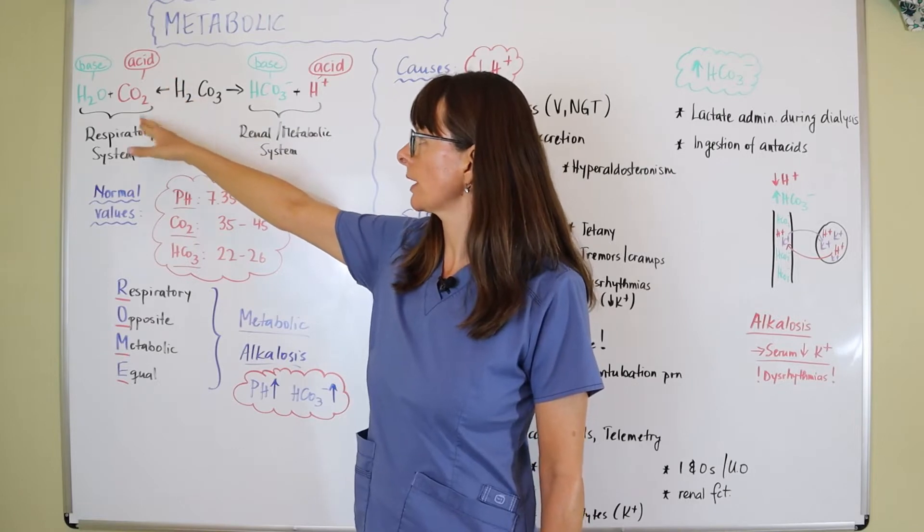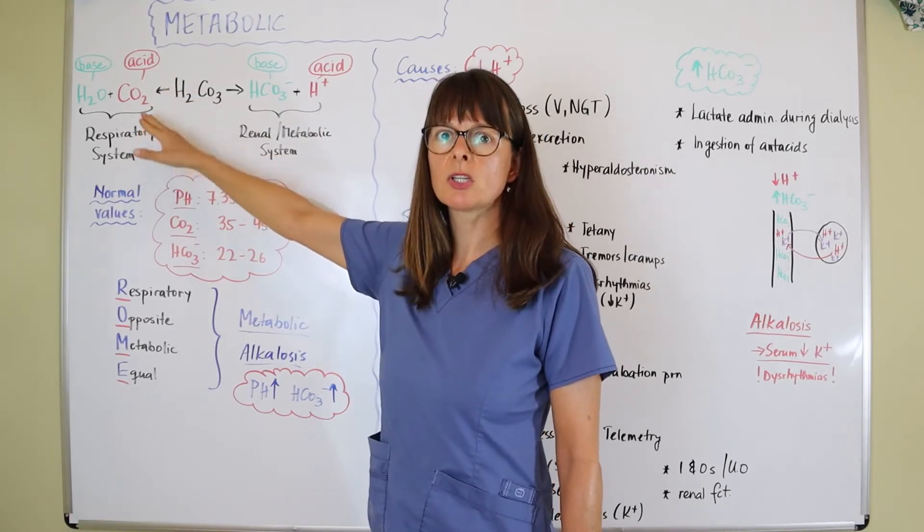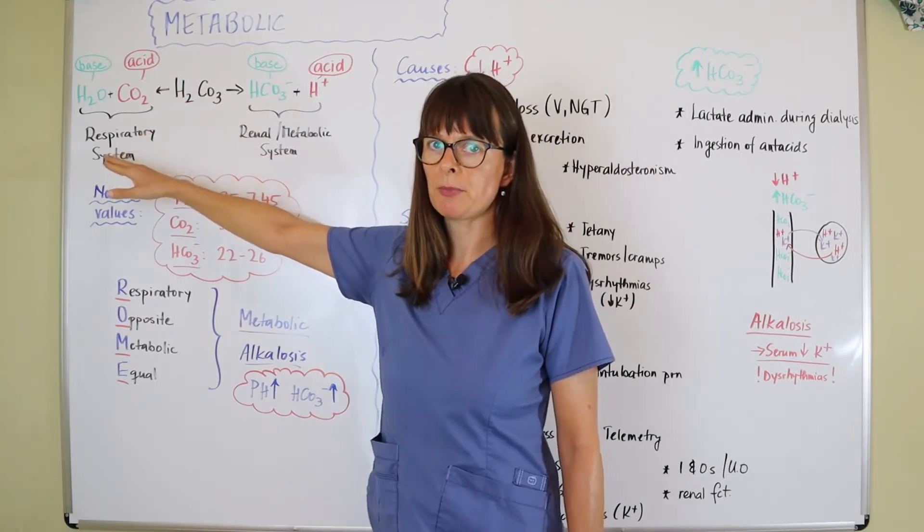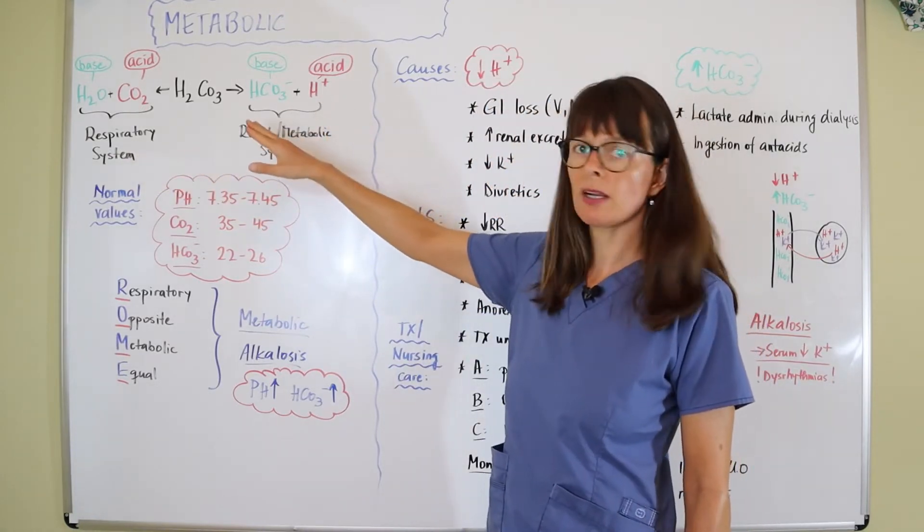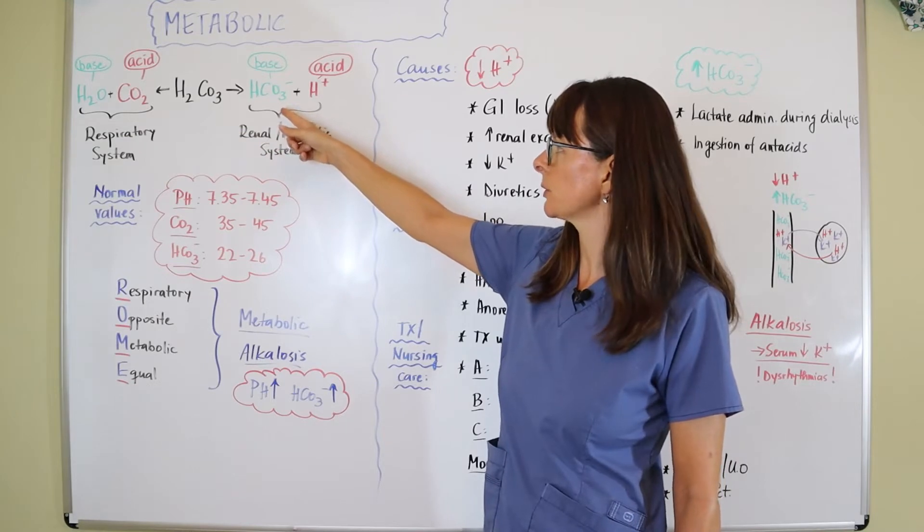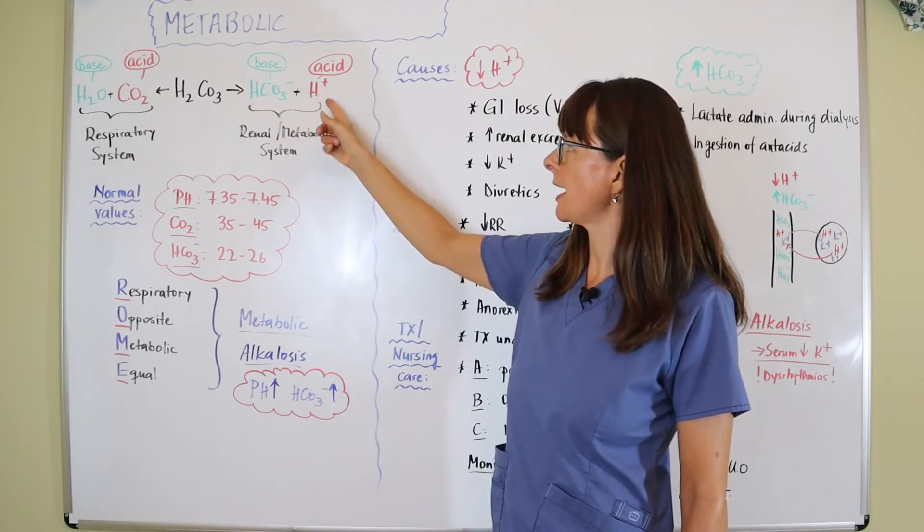The respiratory system breaks this carbonic acid down into H2O and CO2, and we regulate it by increasing or decreasing respiratory rate and depth. On the metabolic or renal side, the kidneys break carbonic acid down into bicarbonate, HCO3-, and hydrogen ion, H+.